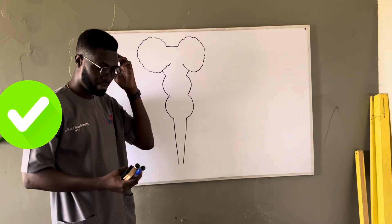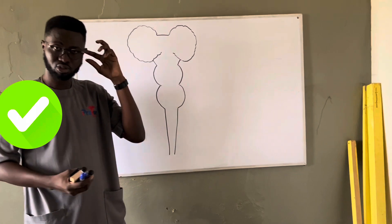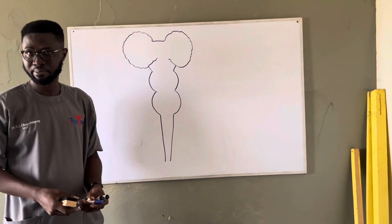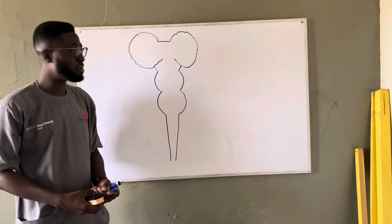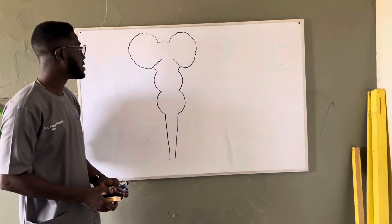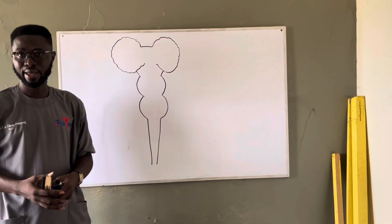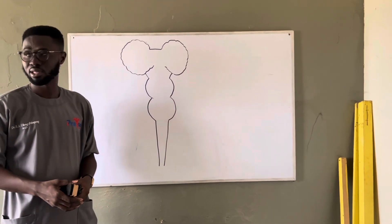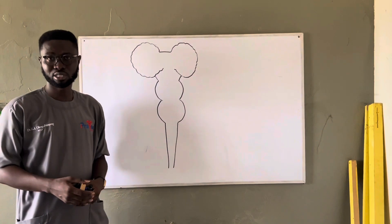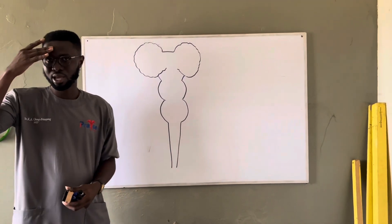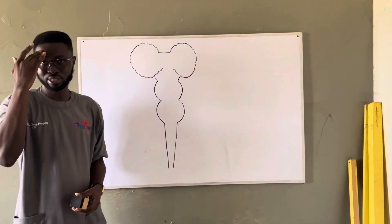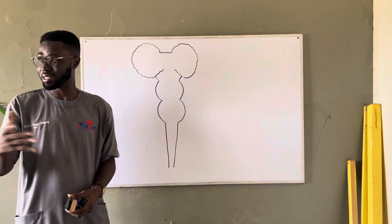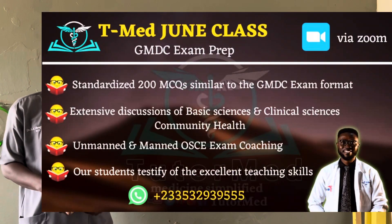Today we met a patient with a stroke. We wanted to distinguish between upper motor neuron issues and lower motor neuron issues. The patient with a stroke who has an upper motor neuron lesion would have a preserved contraction of the frontalis muscle — they can wrinkle the forehead — but the lower motor neuron lesion patient cannot.